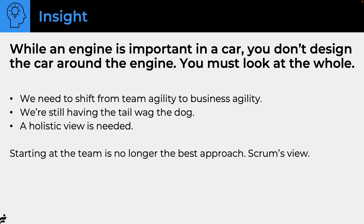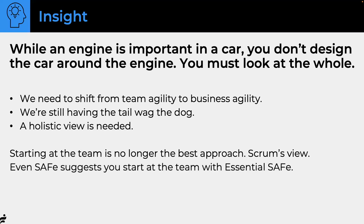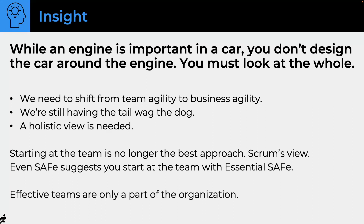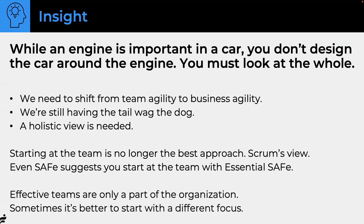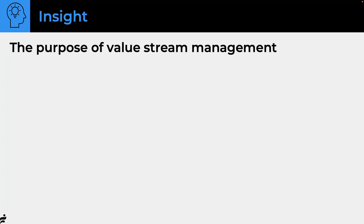Starting at the team is no longer the best approach, even though it's kind of the Scrum view where we build up. I'm not saying we start at the top and force it down either. I'm going to suggest that we start with value streams in mind. Even in SAFe, a lot of people start with Essential SAFe, which is the team level — but effective teams are only part of an organization. We have to go further than this.